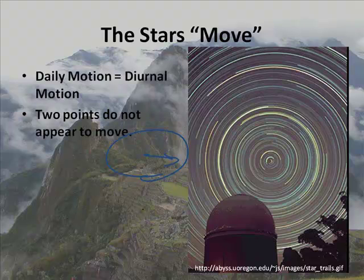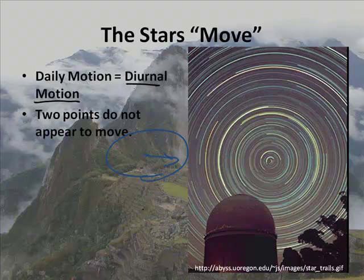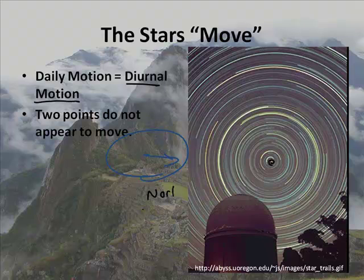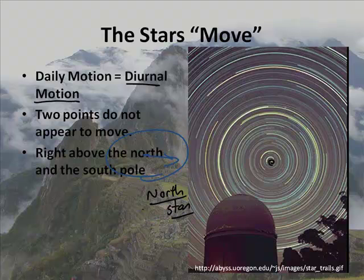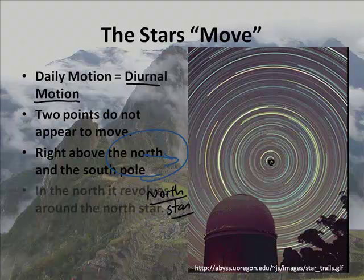This motion is called diurnal motion — the daily motion. You'll want to write that down. Now, two points do not appear to move, and that is just the center part — what we typically call the North Star. That's the part that doesn't appear to move; everything rotates around that. That's also true in the south — right above the north and south poles, those particular points do not move. That's called diurnal motion.